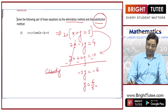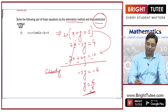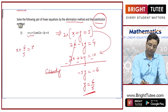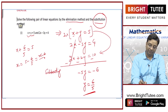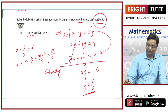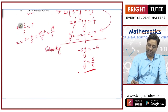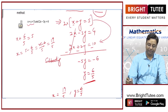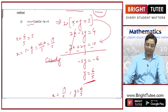Now, I have got y equal to 6 by 5. I will place this value in this equation. So, x plus 6 by 5 is equal to 5, hence x is equal to 5 minus 6 by 5, that is 25 minus 6 by 5, which is equal to 19 by 5. So, my answer is x = 19/5 and y = 6/5.